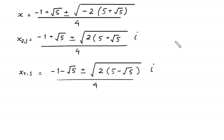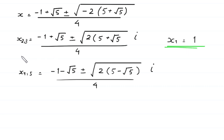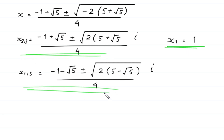The first solution is x₁ equals 1. So these are the five solutions of the equation x to the power 5 minus 1 equals 0. Thank you.